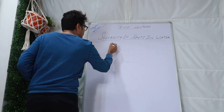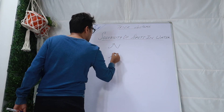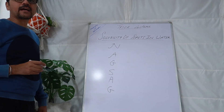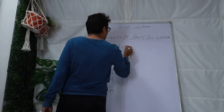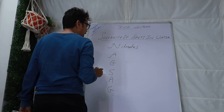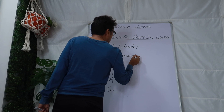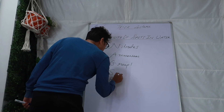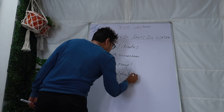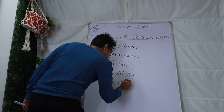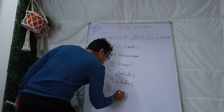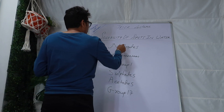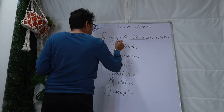Just remember the code word NAG SAG. N stands for nitrates, A stands for ammonium, G stands for group 1. S stands for sulfates, A stands for acetates, and G stands for group 17. If you know NAG SAG well, your solubility of salts in water is done.